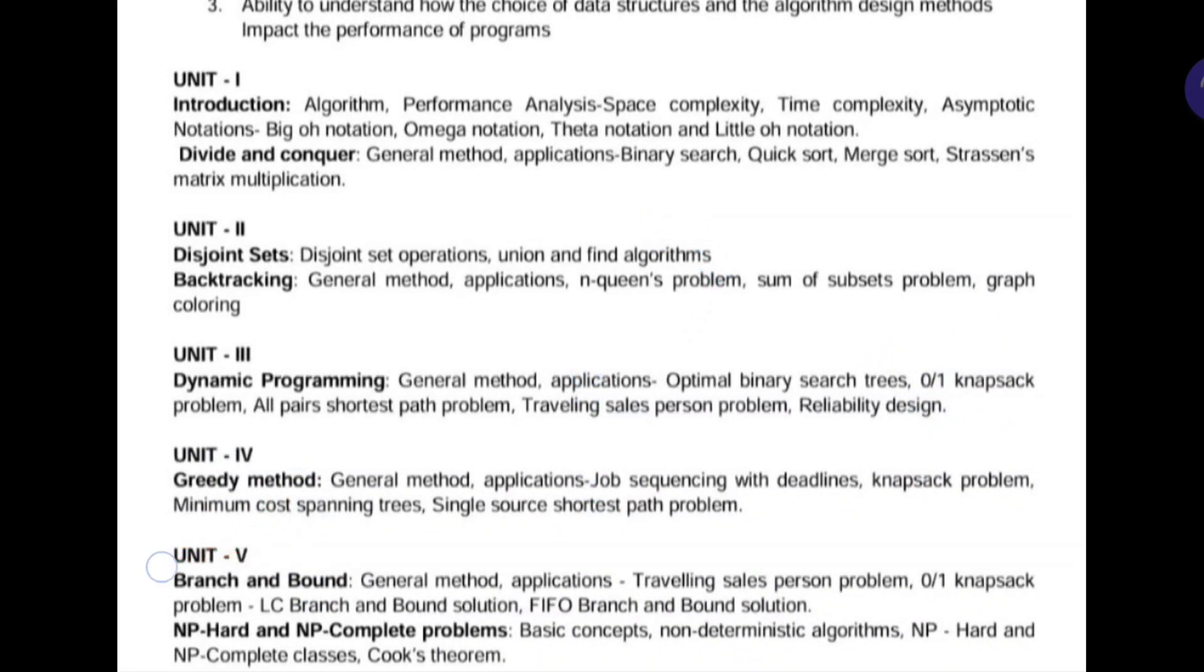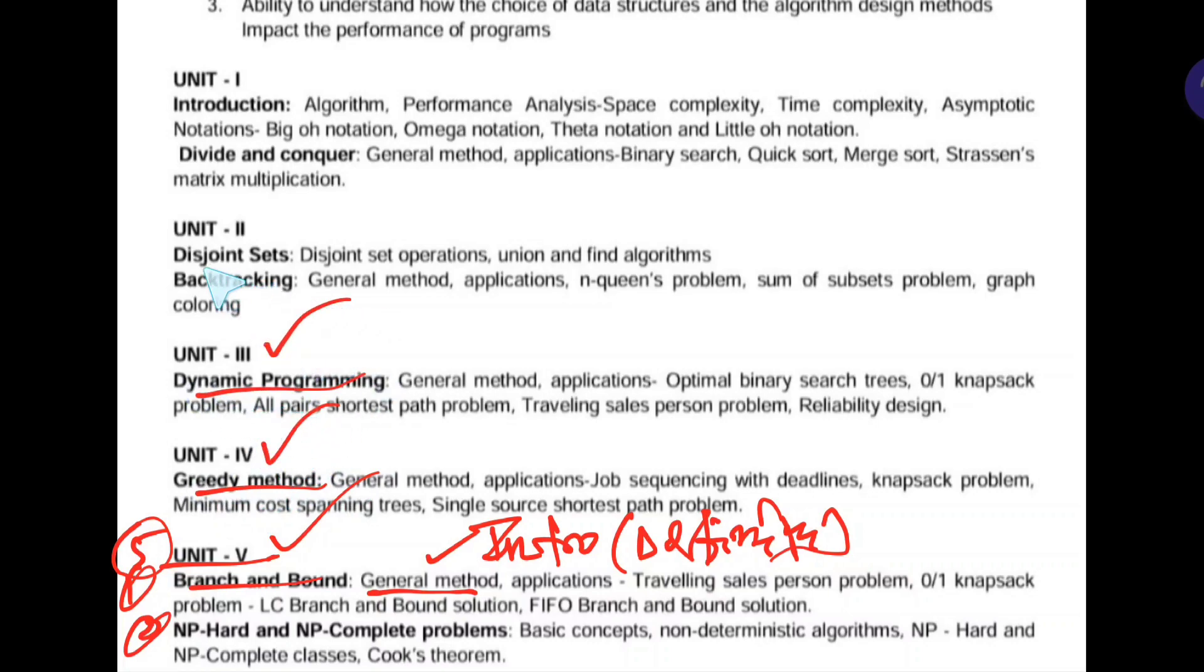From fifth unit having two chapters, branch and bound, NP hard and NP complete. So every chapter we have general methods, means intro, introduction and definition. Definition of the title. What is branch and bound? What is greedy method? What is dynamic programming? And compare backtracking and dynamic programming. Like that you will get in the questions. Applications are traveling salesperson problem and algorithm, 0 by 1 knapsack problem, LC branch and bound solutions, and FIFO. This third and fourth question I have not shooted the video. Remaining all videos are there.